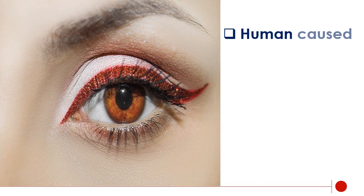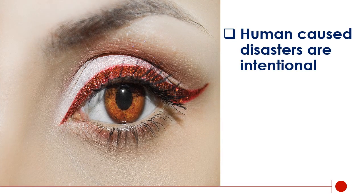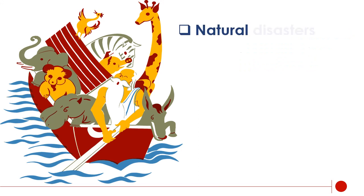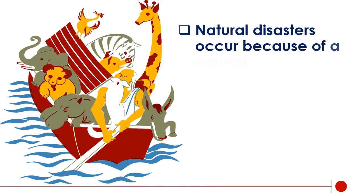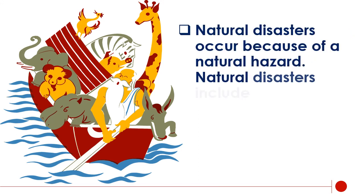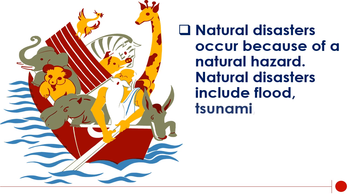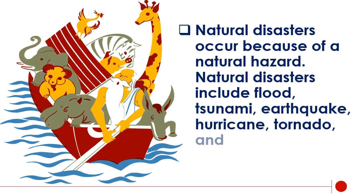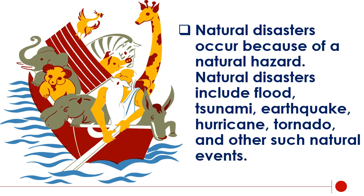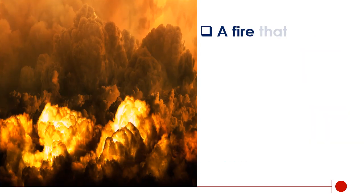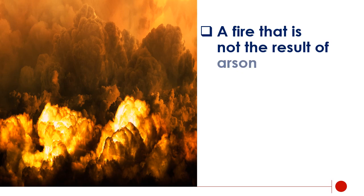Human-caused disasters are intentional. Natural disasters occur because of a natural hazard. Natural disasters include flood, tsunami, earthquake, hurricane, tornado, and other such natural events. A fire that is not the result of arson is also considered a natural disaster.